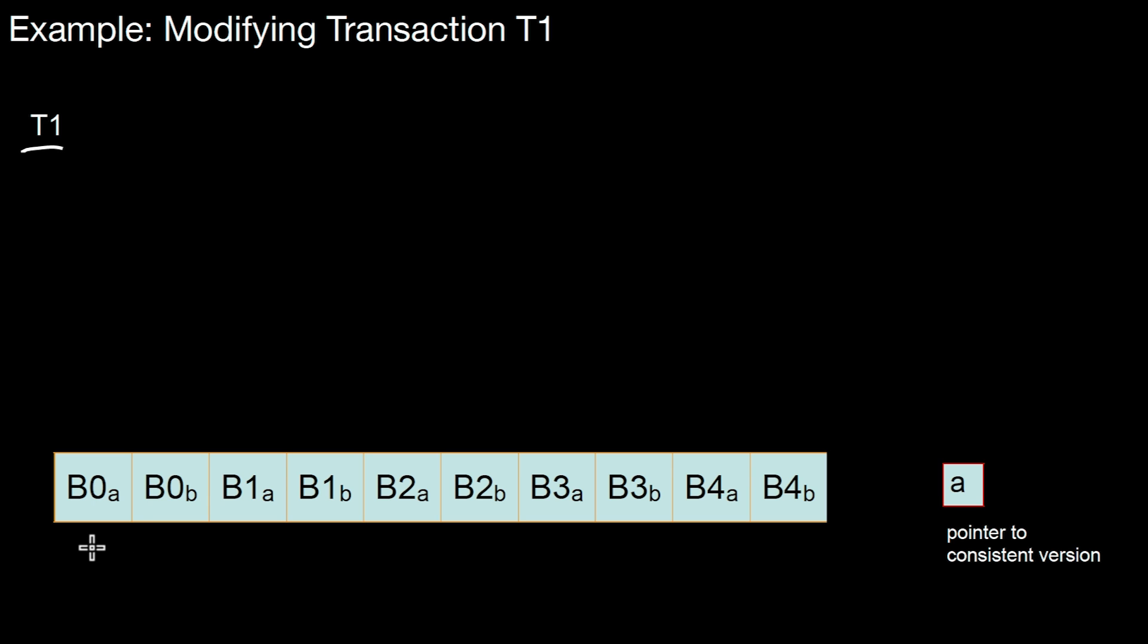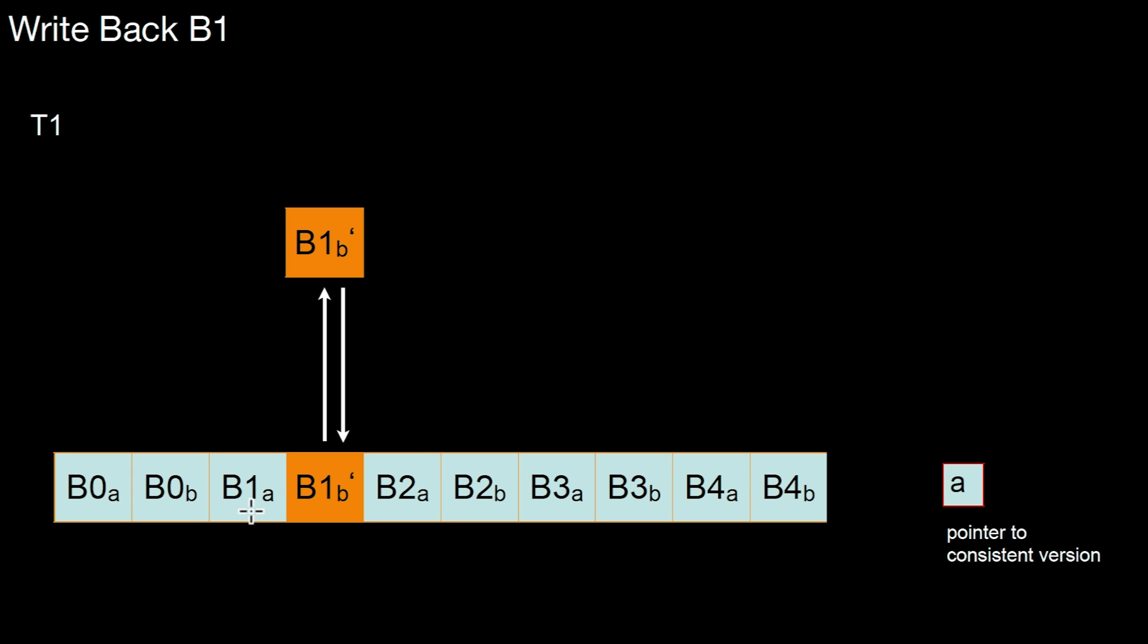To start with, I assume that the A and B versions contain the same data. Let's assume T1 is interested in block number 1. So it will read the B version of block number 1 into main memory. Then it might modify that version, and eventually it will also write it back to the B version. Basically, T1 can do whatever it wants on the B version. It doesn't really matter, because we are not destroying the A version. As long as we are not writing over the A version, everything is fine.